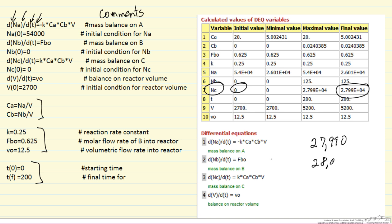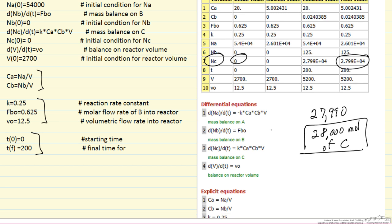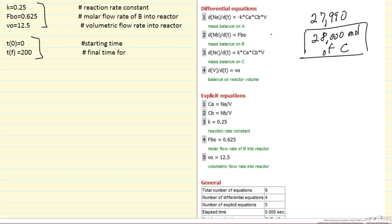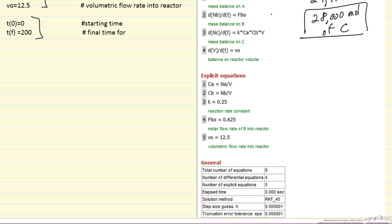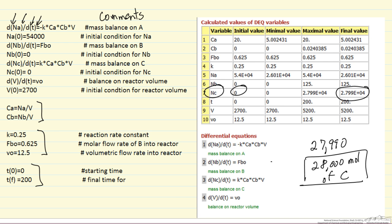We expect 28,000 moles of C in terms of significant figures after 200 minutes of reaction. POLYMATH shows the differential equations with the comments, the other equations that we used, and gives you some information about error. Very easy now with more complicated differential equations to use the same approach. That's why it's good with this simpler case to just write a numerical solution, and we can determine for the semi-batch reactor the number of moles of product after 200 minutes.